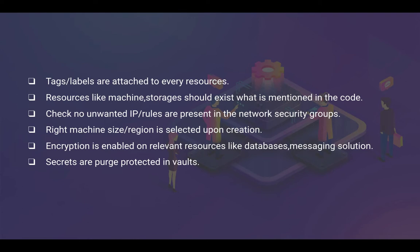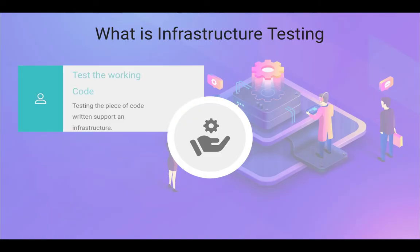Check that no unwanted IP rules are present in network security groups. A common practice is to leave multiple IP addresses or CIDRs like 10.0.0.0 or 0.0.0.0/0, which leaves your virtual network vulnerable. Infrastructure testing scripts can help detect those unwanted rules. Also ensure the right machine size or region is selected upon creation to maintain uniformity. Encryption should be enabled on resources like databases or messaging solutions. Another example: secrets should be purged and protected in whatever vault you are using.